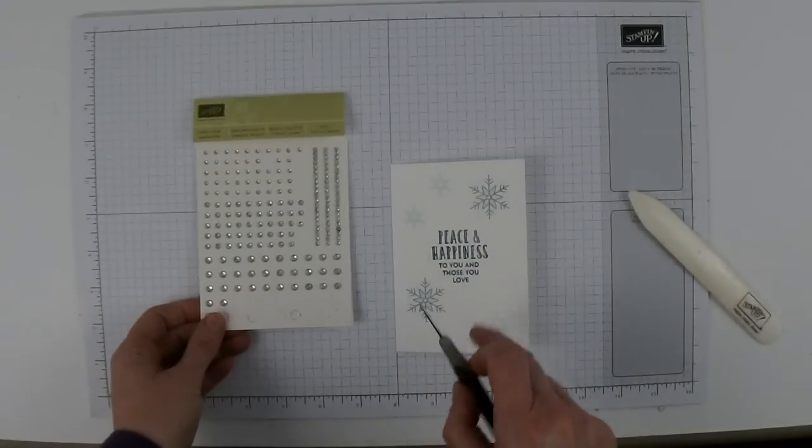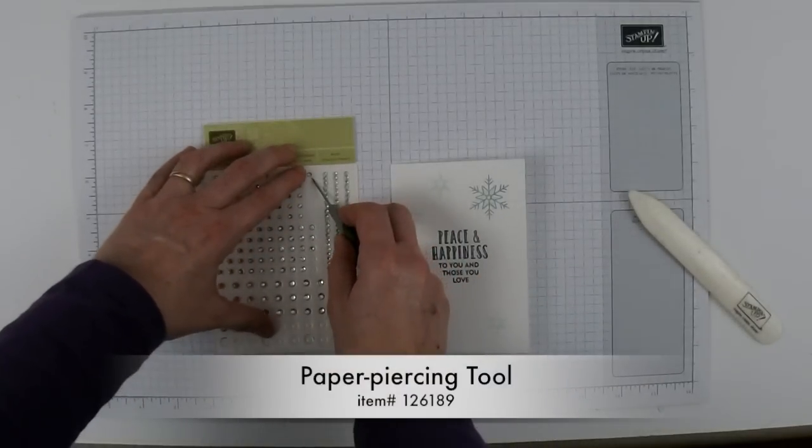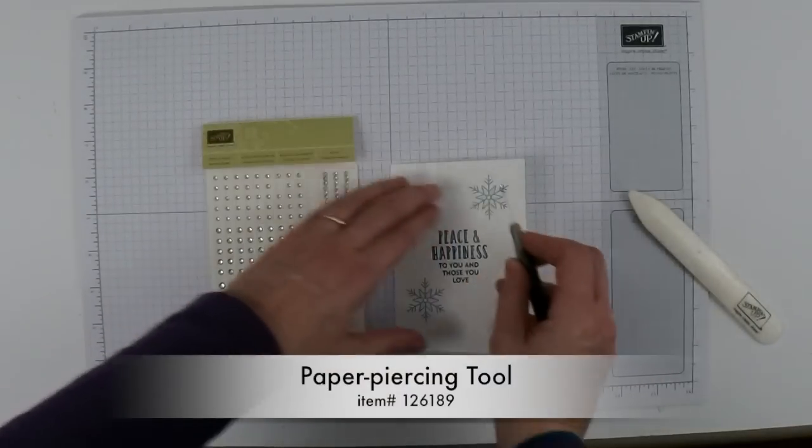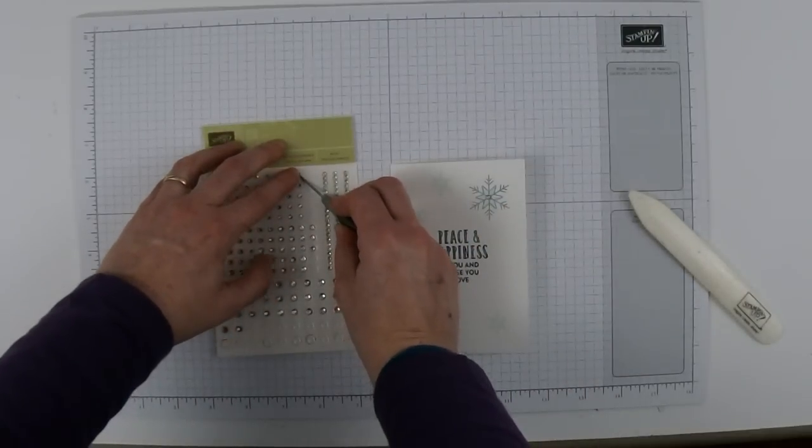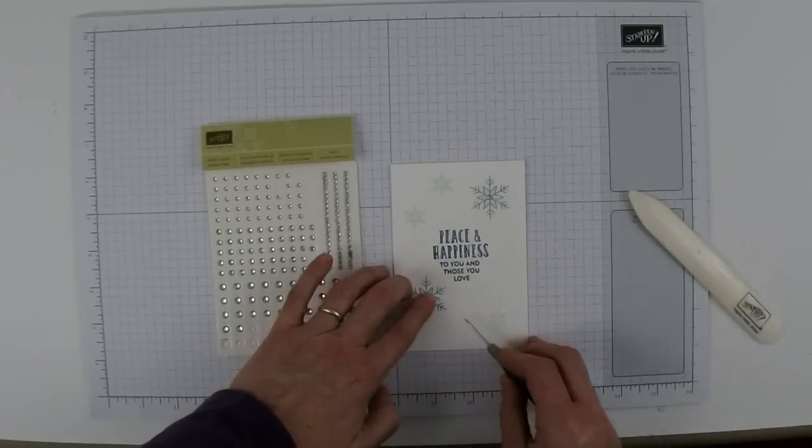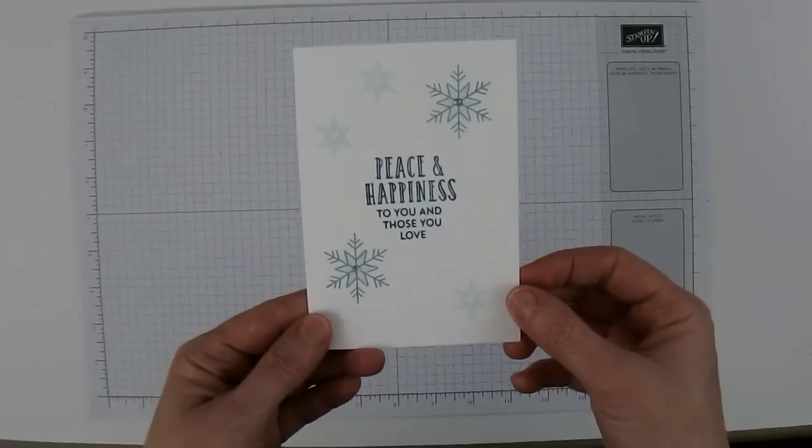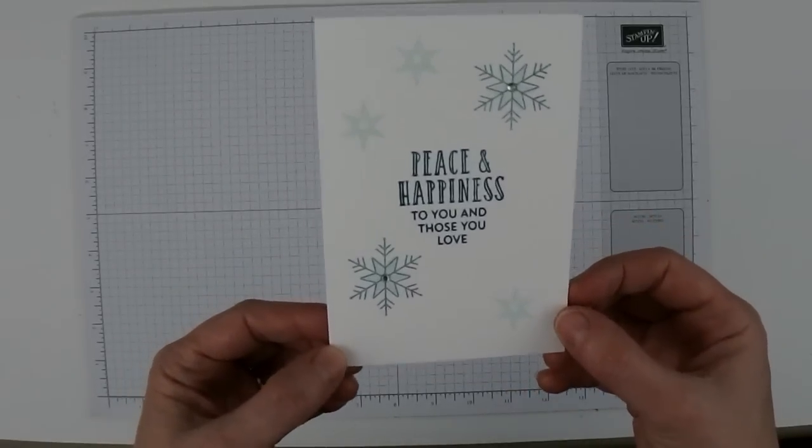And then we just need a little bit of bling for those snowflakes. So I'm going to take my rhinestone jewels and my paper piercing tool which helps me lift them off. I'm going to add two to the center of these larger snowflakes. The first card is all done and it's just pretty and simple. Perfect.